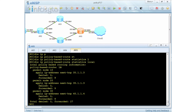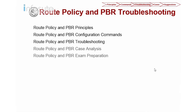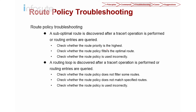Let's conclude PBR and route policy, then look into troubleshooting. For route policy troubleshooting, it's important to understand how route policy works. Two conditions arise: a suboptimal route is discovered after traceroute, or routing entries are queried. Earlier we saw suboptimal paths due to mutual importing and routing loops caused by summarization.